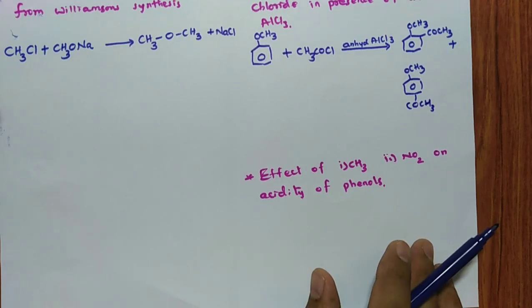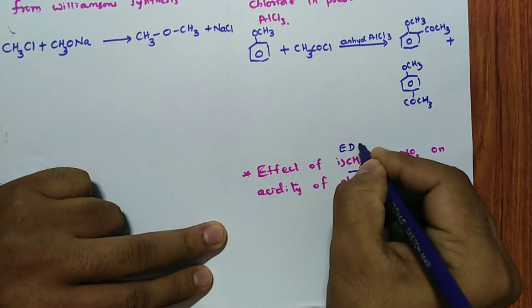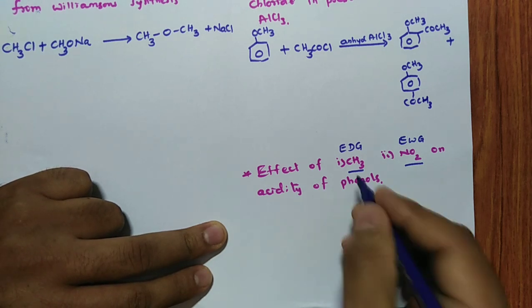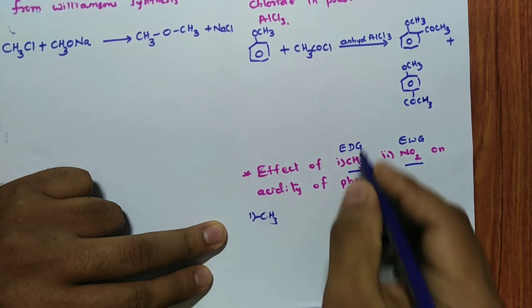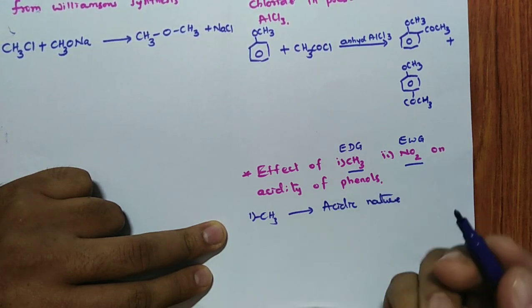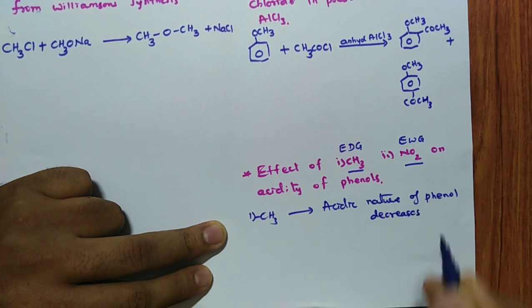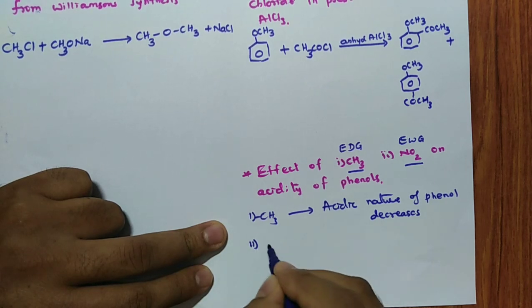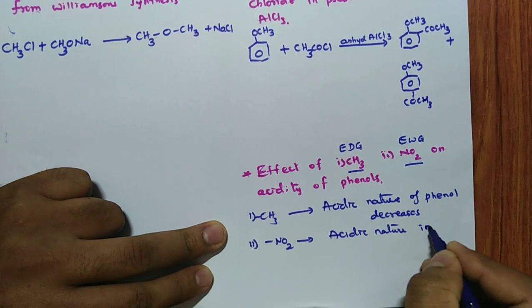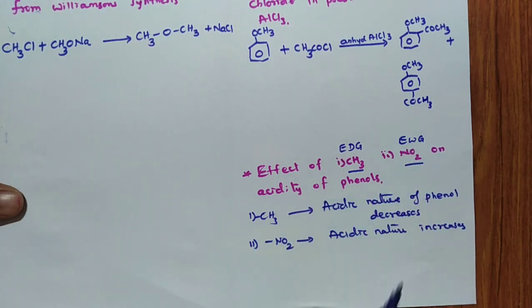Effect of CH3 and NO2 on the acidity of phenol. CH3 comes under electron donating group; NO2 comes under electron withdrawing group. Electron donating group — always remember — decreases the acidic nature of phenol. NO2 is electron withdrawing, so the acidic nature of phenol increases. Remember that point.